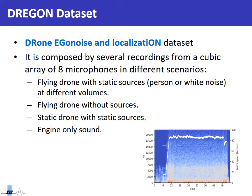We are going to use an already created dataset named DRAGON, or Drone Egonoise Localization, for our project. This dataset is composed of several recordings made from a cubic array of 8 microphones that is mounted on a drone. There are several sets of recordings in different scenarios: one of them is a drone flying with static sources at different volumes, we also have recordings of the drone flying but without sound sources, we also have some recordings of only the sources without the drone egonoise, and also some additional recordings and information about the engine speed and engine sound are available.